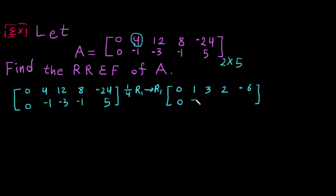Here is the leading one. We want all other entries in this column to be 0 — the rest of the column except the leading one has to be 0. So we need to find what to add or subtract to make the minus 1 become 0: minus 1 plus 1 equals 0, so we use the leading one from row 1.